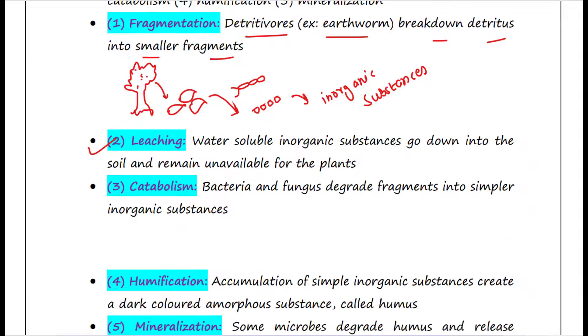Next is catabolism. Bacteria and fungus will degrade fragments into simpler inorganic substances. So after fragmentation, some small fragments are generated. Now bacteria will come here, there is fungus. What they will do? They will degrade these small fragments into more simple inorganic substances.